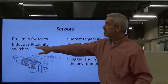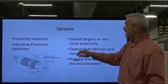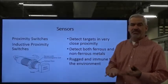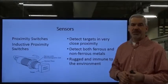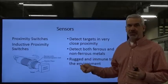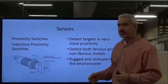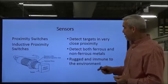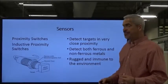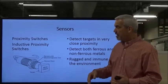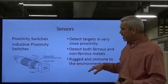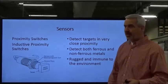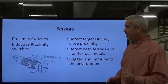The inductive proximity switch detects both ferrous and non-ferrous metals — aluminum, copper, steel. You can tell a ferrous metal by taking it to a grinder: if it sparks, it's ferrous; if it doesn't, it's non-ferrous. But either way, the proximity switch can pick them up. These are rather rugged — I've seen them take a lot of abuse. They have to be pretty well busted up to stop working.